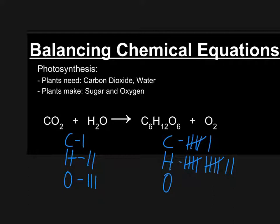On the right-hand side, we also see the oxygens in two different places. There are six oxygens in sugar, and then there's two oxygens in the oxygen gas. You've got to combine those two together in order to get eight total oxygens on the right-hand side. We'll add in our tallies for those.